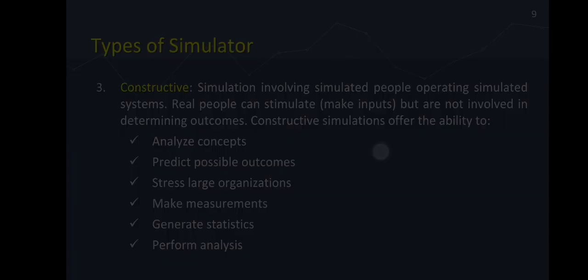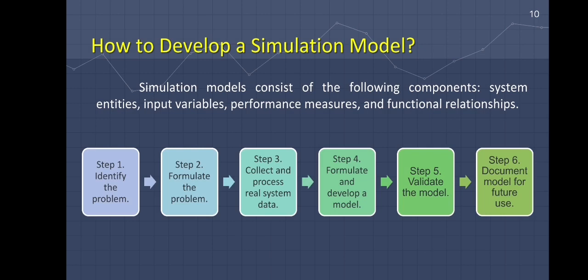We now go to developing a simulation model. A simulation model consists of the following components: system entities, input variables, performance measures, and functional relationships.